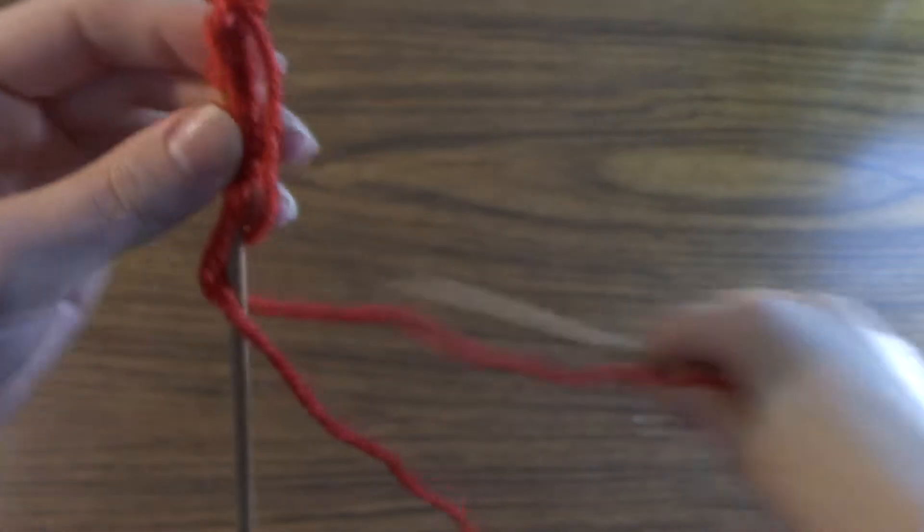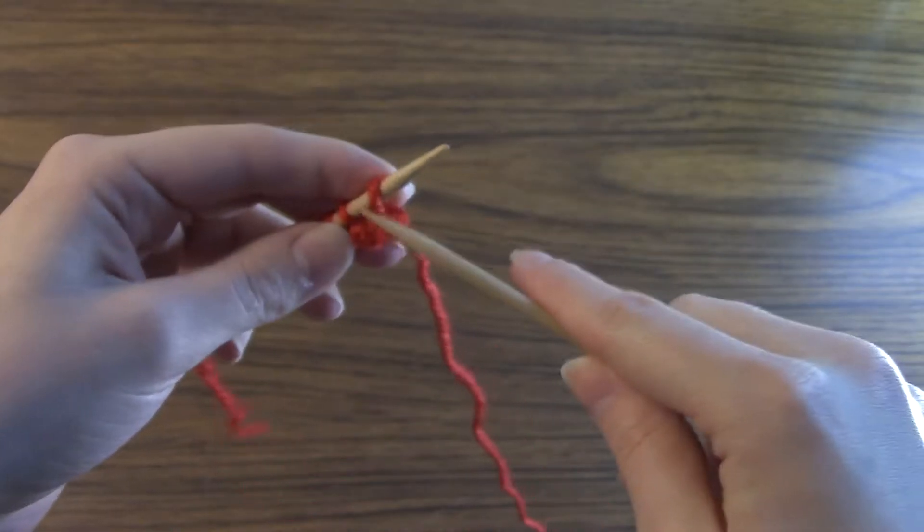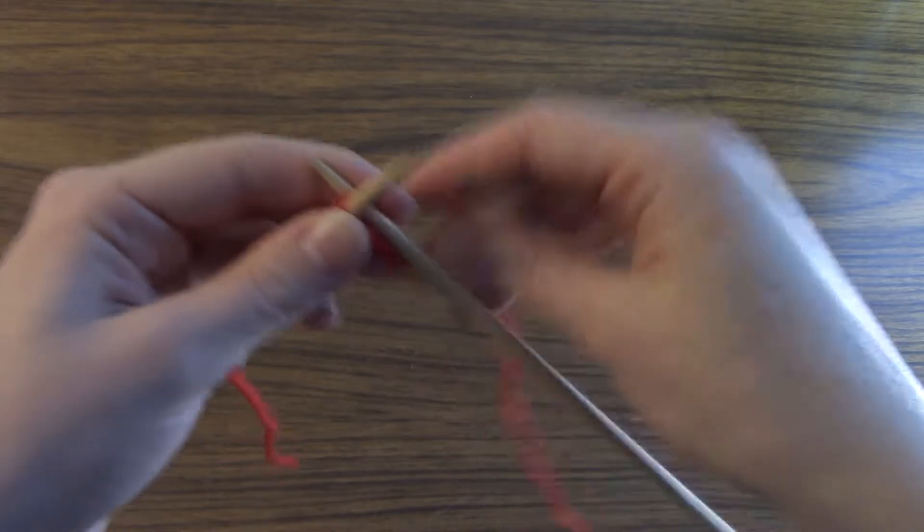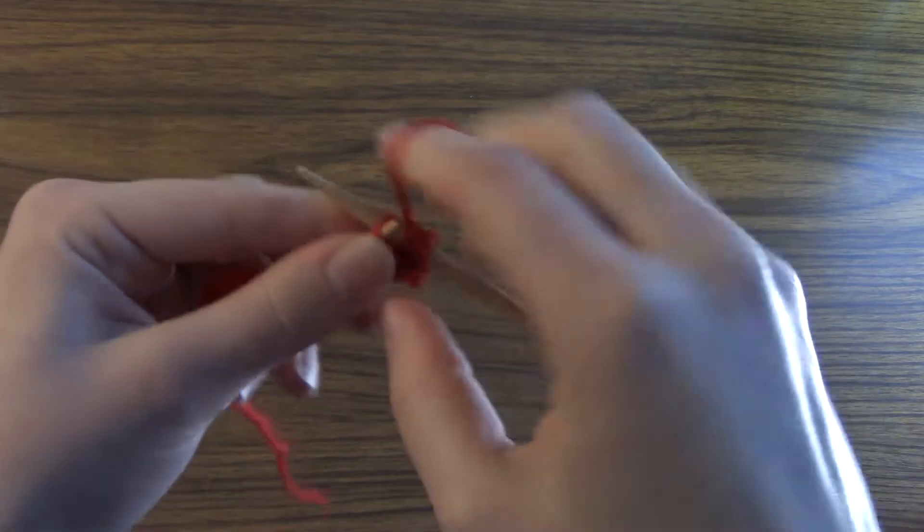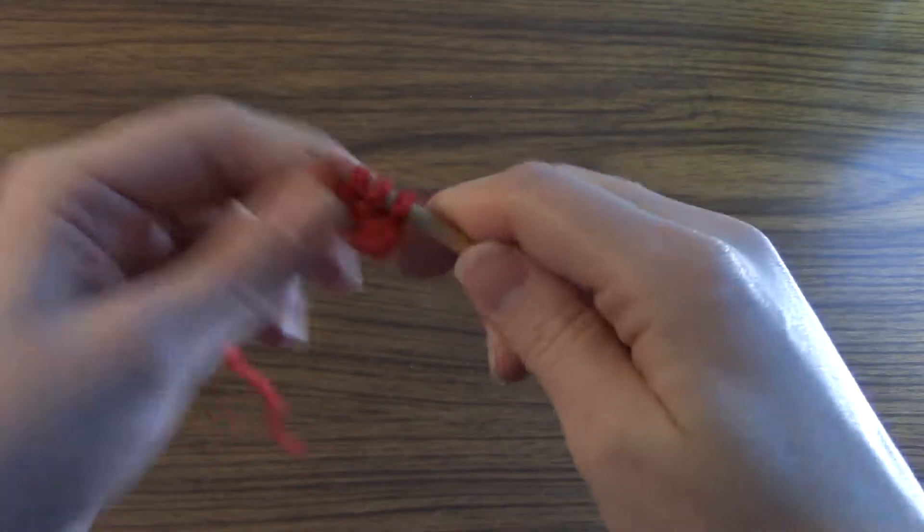So then on the next row, you would want to knit every stitch, which you can also learn in my other videos. So this side, we're going to knit every stitch, and I'll show you what the finished pattern looks like.